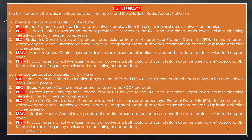RLC operates in acknowledged mode, unacknowledged mode, and transparent mode. It provides retransmission controls, duplicate detection and reordering. Fifth is MAC — Medium Access Control layer provides the radio resource allocation service and the data transfer service to the upper layer. Sixth is PHY — Physical layer is a highly efficient means of conveying both data and control information between an E-NodeB and UE, using modulation of radio frequency carriers and modulating encoded data.